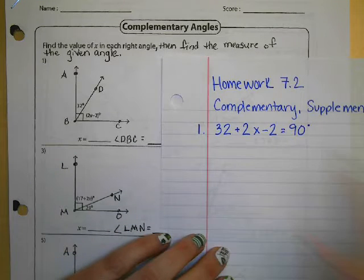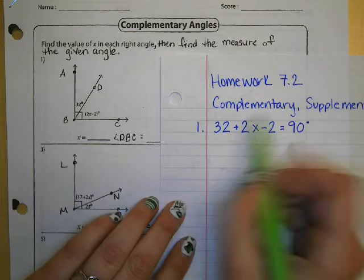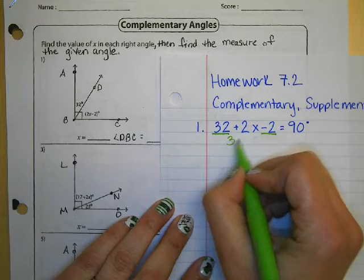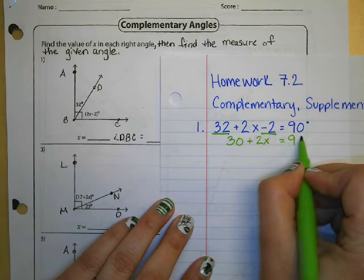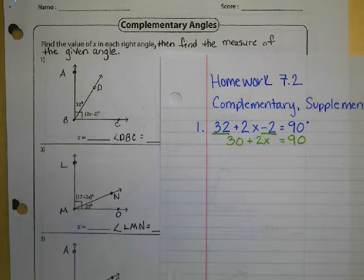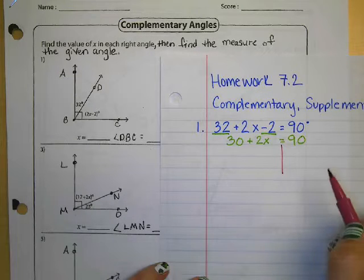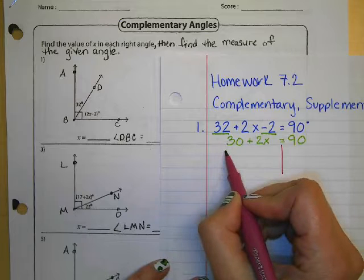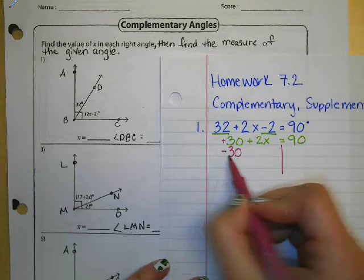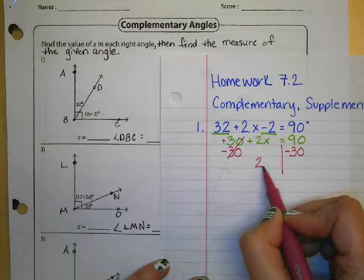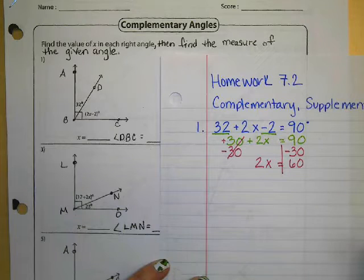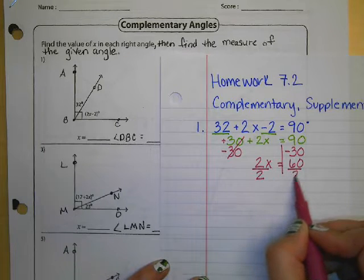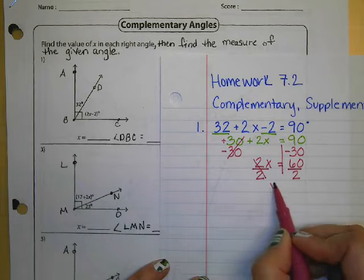From this equation, the first thing we need to do is combine our like terms. We have 32 minus 2, so we can combine those — 32 minus 2 gives me 30. Bringing down the 2x: 2x plus 30 is equal to 90. Now I have a two-step equation. Remember that your equal sign is your balancing point, and you want to isolate x. So I subtract 30 from both sides, leaving 2x equal to 60. Then I divide by 2 on both sides, and x is equal to 30.